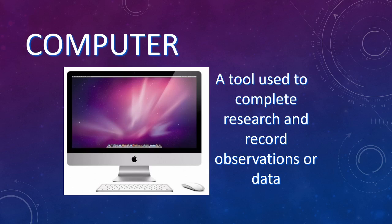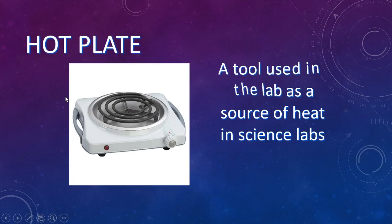We use computers a lot in science to do research, record our observations and data, or even make data tables or graphs. A hot plate is what we use to heat up substances in the lab when we want direct and controlled heat. You can set it to a specific temperature, and it works kind of like your stove top.